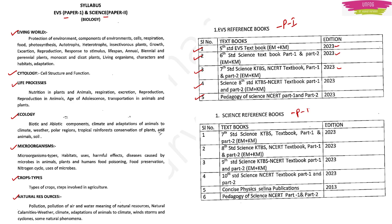For Paper 2, the reference books are: 7th Standard Science KTBS Textbook, 8th Standard NCERT, 9th Standard NCERT, and 10th Standard NCERT. Also listed is Concise Physics by Selina Publications, which is the ICSC book. For Pedagogy of Science, the NCERT book is recommended. So this is the reference book list given by the Government of Karnataka on their website.